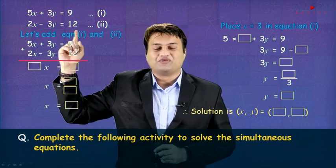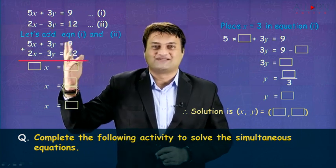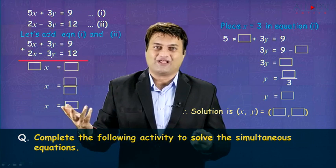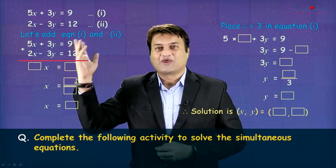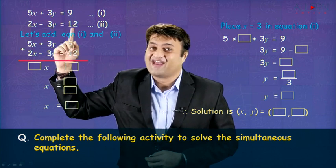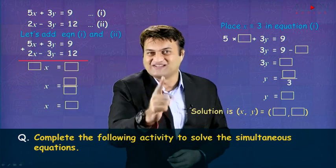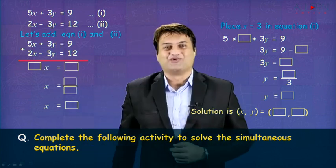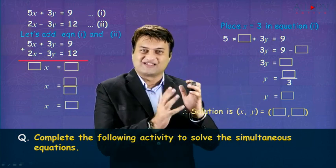Now look at the coefficients of x. The coefficients of x are 5 and 2. We cannot eliminate x. Look at the coefficients of y. The coefficients of y are 3 and 3. The coefficients are equal. So we will eliminate y. That's the first thing we need to decide in this method.